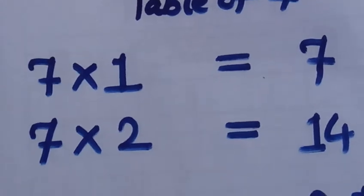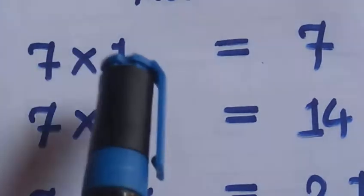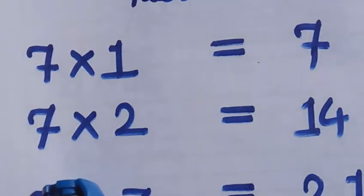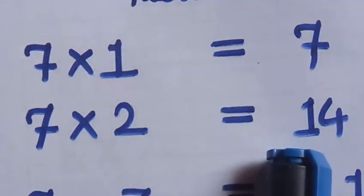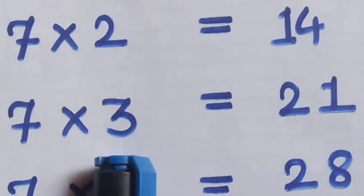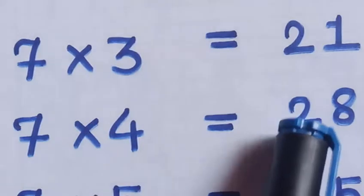So let's speak with me. 7 1's are 7, 7 2's are 14, 7 3's are 21, 7 4's are 28.